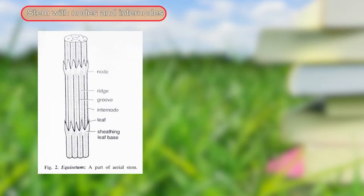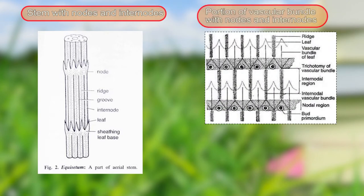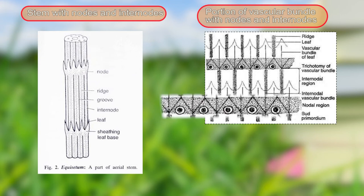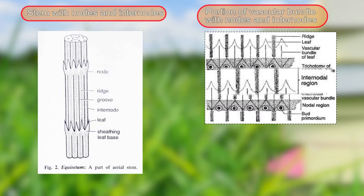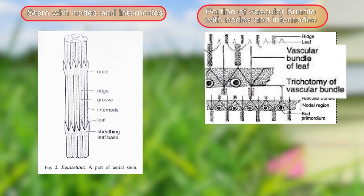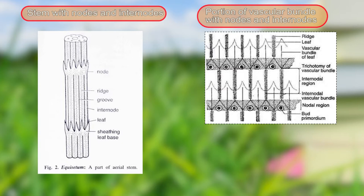Here we can see the stem with nodes and internodes. In each node there are sheath leaves. Looking at the internal section, this is the nodal region and this portion is the internodal region. The vascular bundle is not branched in the internodal region, but as soon as it comes to the nodal region it becomes branched. A single trace of vascular bundle is also seen going to the leaves.